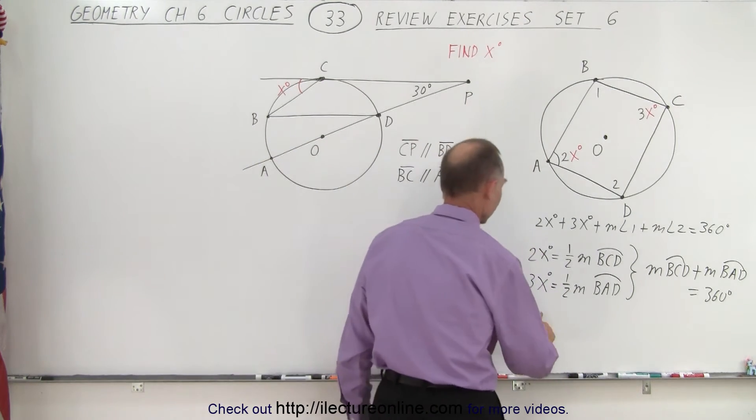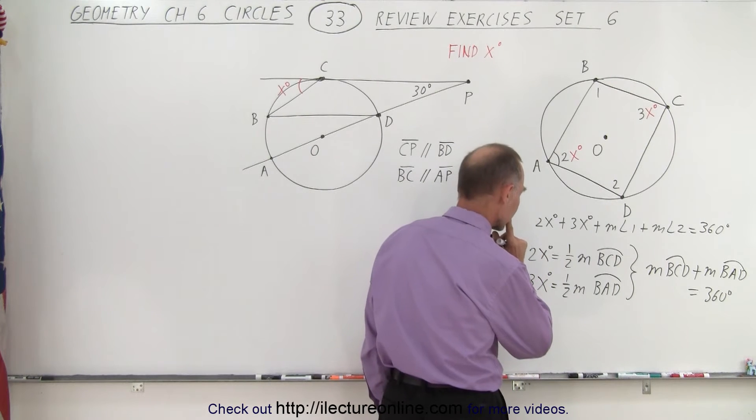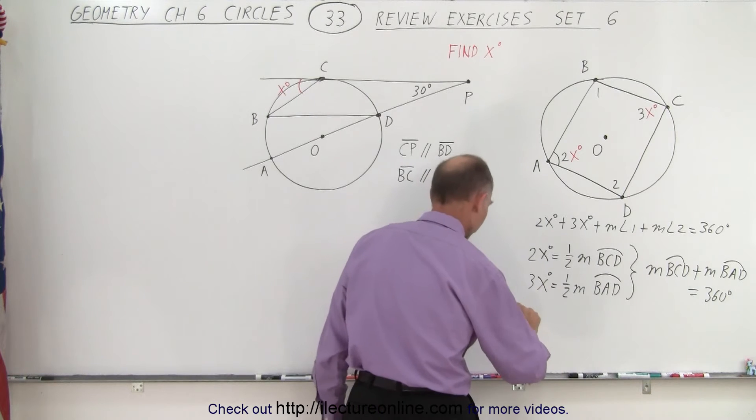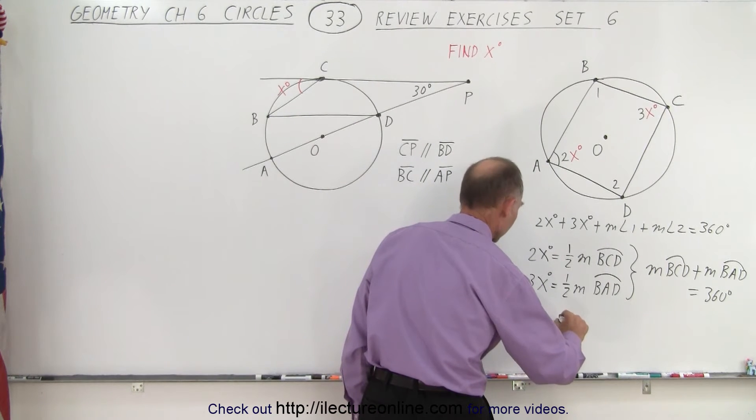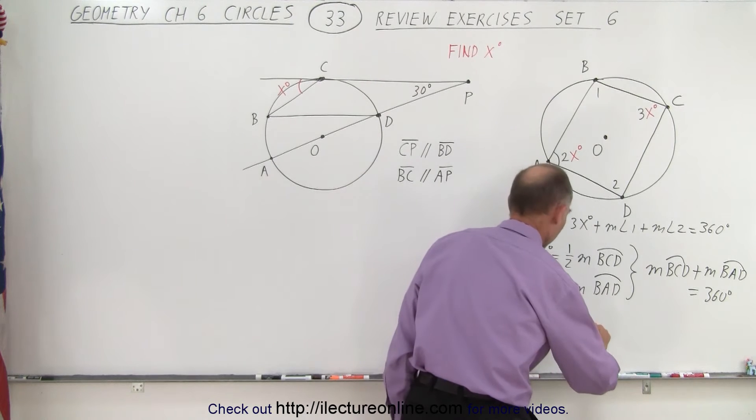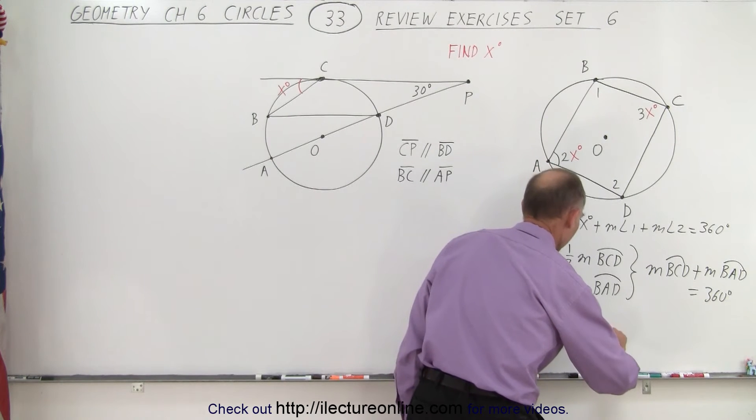Because now we can say that 2x degrees plus 3x degrees is equal to one half the measure of B, C, D plus the measure of B, A, D.